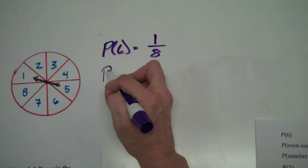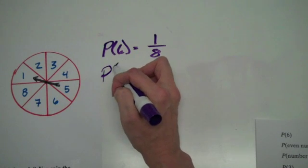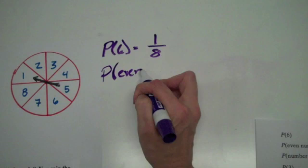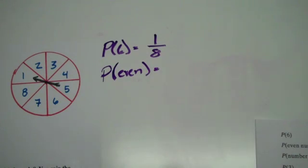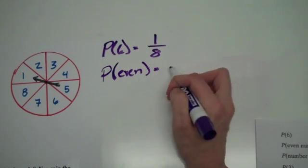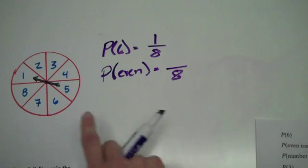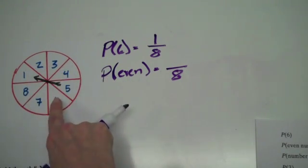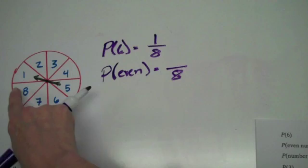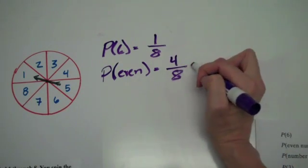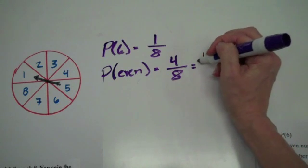The second one is we want to know the probability of getting an even number. We still have eight total because we haven't changed the amount of things on the spinner, but now we want to know even. Even numbers are two, four, six, and eight, so that gives us four out of eight, or one half.